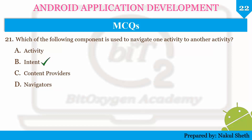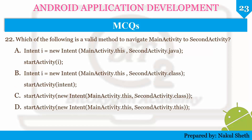Next question: which of the following is a valid method to navigate from MainActivity to SecondActivity? The options include: (A) Intent i = new Intent(MainActivity.this, SecondActivity.java) then startActivity(i); (B) Intent i = new Intent(MainActivity.this, SecondActivity.class) then startActivity(i).